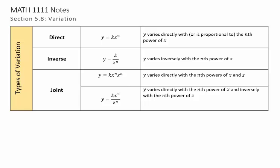In section 5.8, we're going to look at some different types of variation. We have mainly direct, which is of the form y equals k times x to the n, where k is called a constant of variation, so it'll just be some number. We could read this as y varies directly with, or is proportional to, the nth power of x.